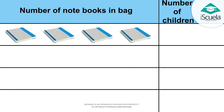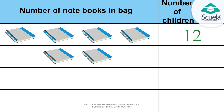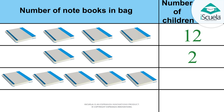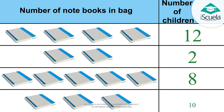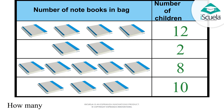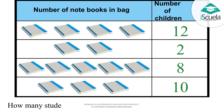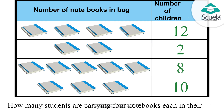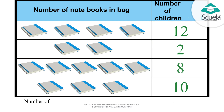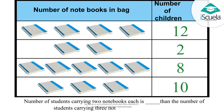12 students are carrying 4 notebooks each in their bag. 2 students are carrying 2 notebooks each in their bag. 8 students are carrying 5 notebooks each in their bag. 10 students are carrying 3 notebooks each in their bag. How many students are carrying 2 notebooks each? 2 students! How many students are carrying 4 notebooks each? 12 students! The number of students carrying 2 notebooks each is less than the number of students carrying 3 notebooks each.